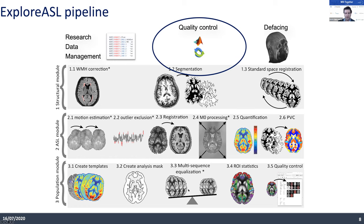There is a population module where you compare different subjects' images on a population basis and can do quality control in MNI space, making normalized and mean images from all subjects. Before we get there, there's a whole area called research data management that we should focus on more. There have been a lot of talks about BIDS and how to do this — I won't focus on that, but I will focus on quality control and defacing.